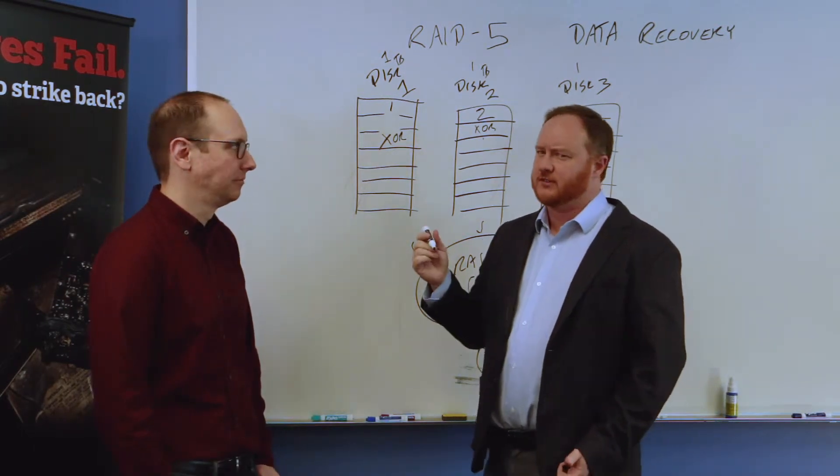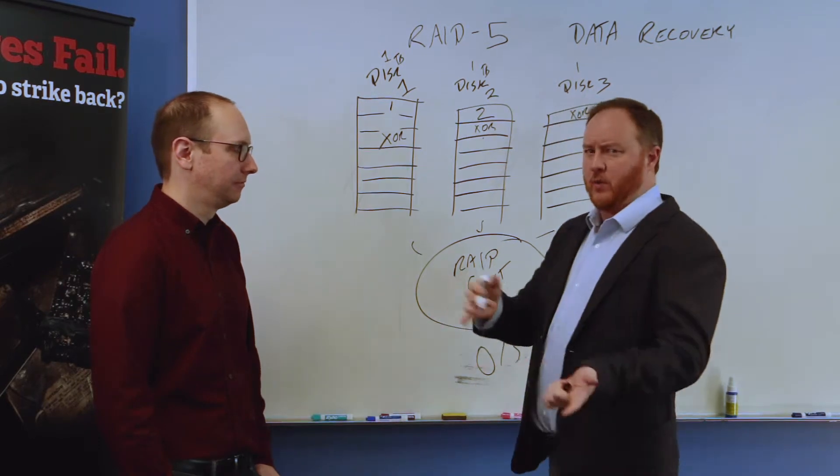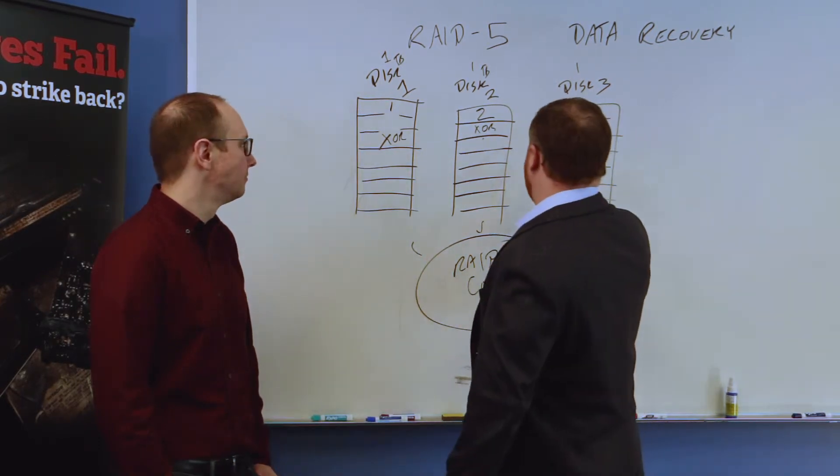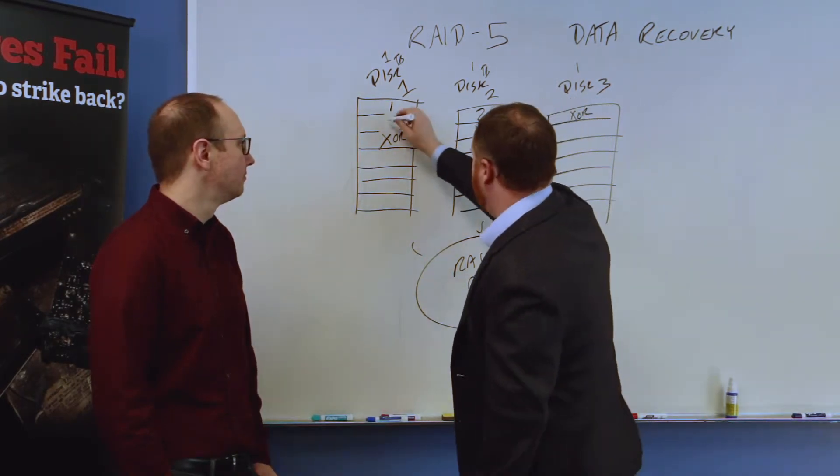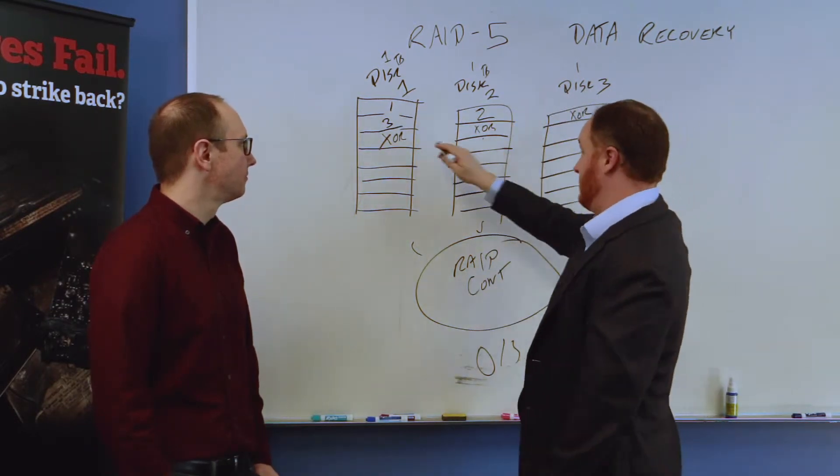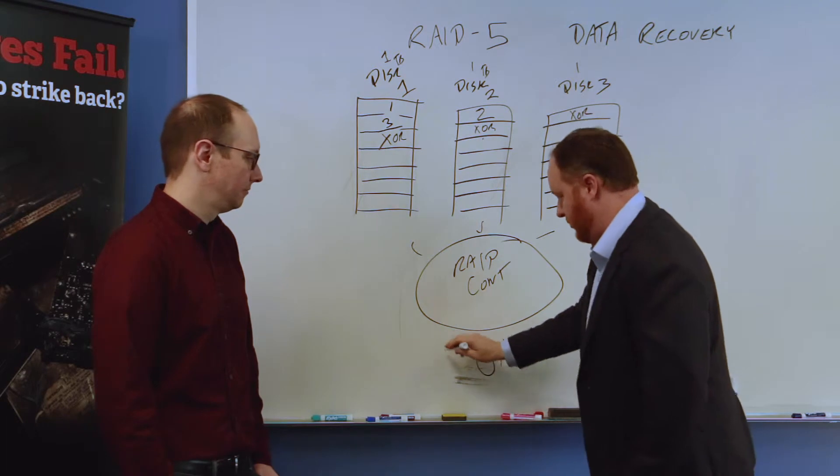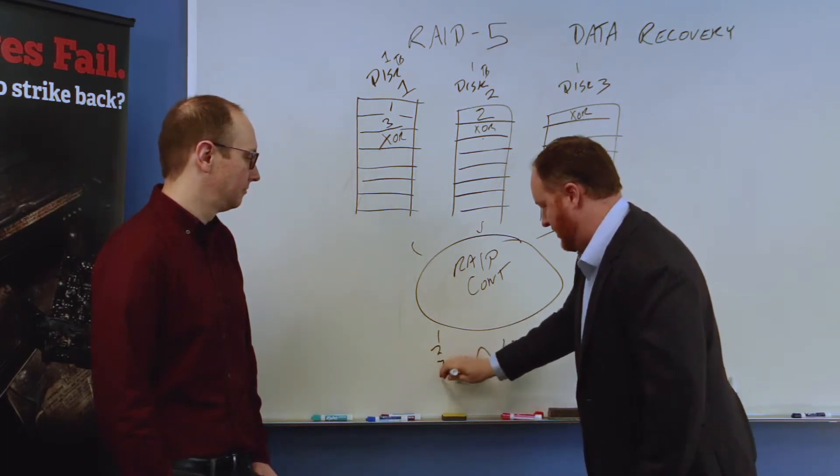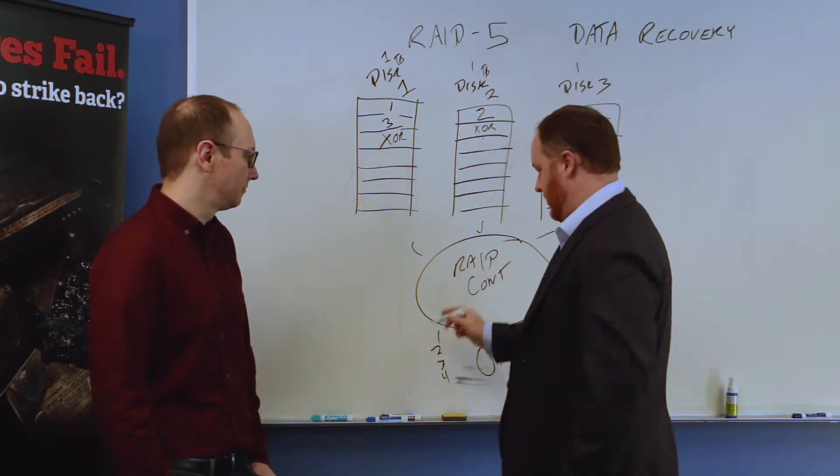What I'm gonna do instead is just do a very mock RAID 5 algorithm here. This is overly simplified compared to what we actually see in the real world. Data block one, data block two, data block three. This would be represented to the operating system down here as one, two, three, four, five, six, seven, eight to infinity.